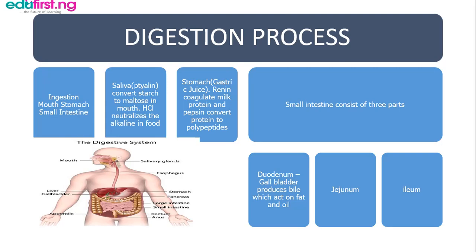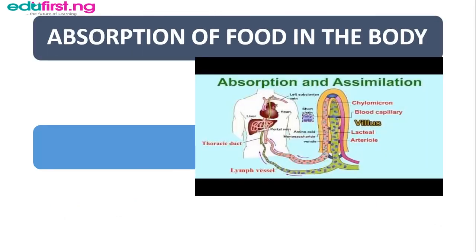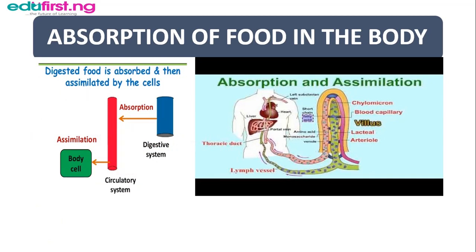Absorption of food in the body. What is absorption? Absorption is the process whereby digested food particles diffuse into the bloodstream, which circulates them to where they are required for metabolic activities. When food is digested by the digestive system, it is absorbed into the circulatory system, which transports it to the cells where it can be assimilated. We have the villi, which contains the lacteals, which transport fatty acids and glycerol. We also have the blood vessels, which transport digested proteins and carbohydrates through the blood capillaries, as we can see from the diagram.